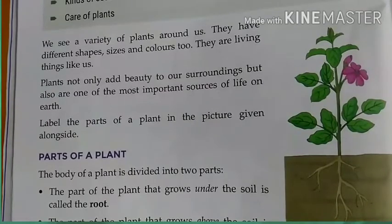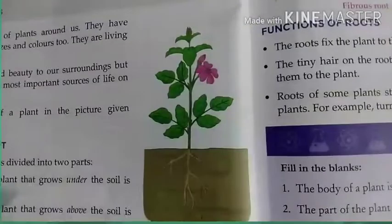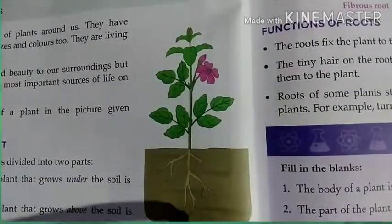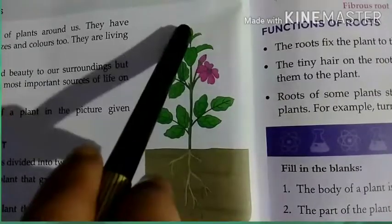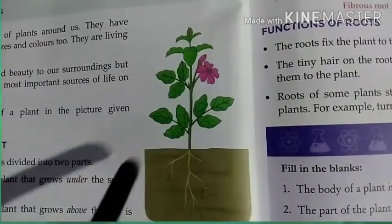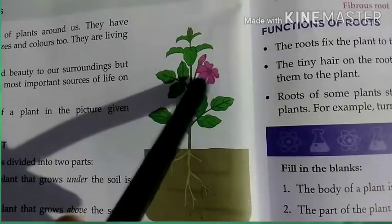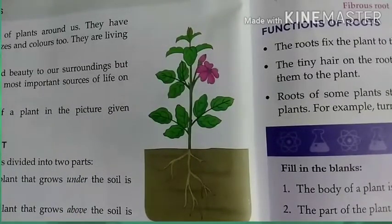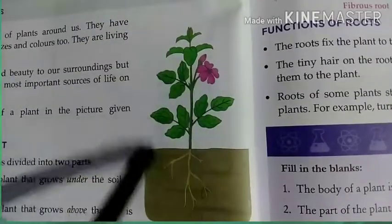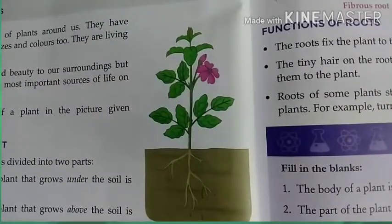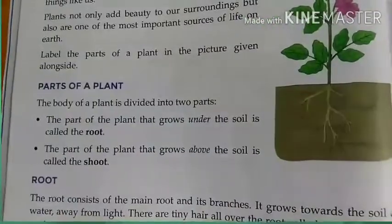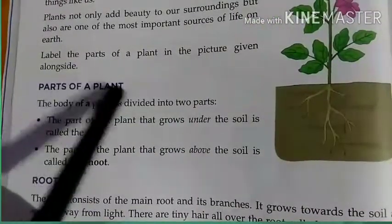Now label the parts of the plant in the picture given alongside. So here we have to label: what is this — root; what is this — stem; leaves; what is this — flower; what is this — bud. These are the parts of the plant you have already studied in class 2.